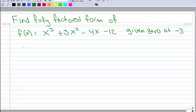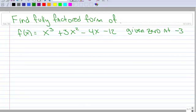Okay, here's an example, a new example. We want to find the fully factored form of this polynomial right there: x to the third plus 3x squared minus 4x minus 12, given a zero at negative 3.